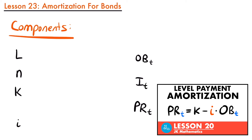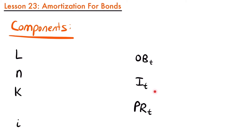What I have on the screen are the components I introduced in that lesson. We're going to talk about how these components will either change or stay the same when we use the amortization method for bonds. In general, when we view the bond as an amortized loan, the price of the bond is what we view as the amount of the loan. Capital L, which used to represent the loan amount, is now going to be P, the price of the bond. The coupon and redemption payments can be viewed as loan payments. N, the number of payments, stays the same — think of it as the number of coupons paid. What changes is K.